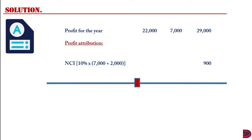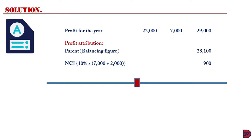The non-controlling interest holds 10%. Since the NCI was valued at fair value, the impairment is attributed solely to the parent. Because NCI is not supposed to share in the impairment, we add the $2,000 back to the subsidiary's profit for the year before attributing its share. So NCI is 10% of ($7,000 + $2,000) = 10% of $9,000, giving $900. The parent's balancing figure is therefore $29,000 less $900 = $28,100.